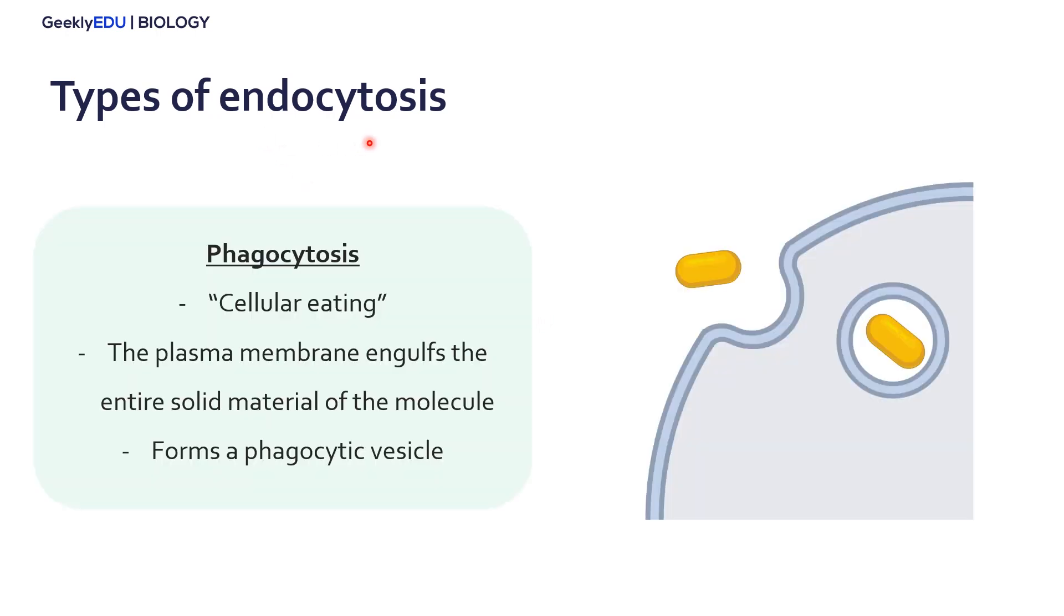Starting with types of endocytosis, there's three main types. The first is called phagocytosis or often referred to as cellular eating. This is when the plasma membrane engulfs an entire solid molecule. Once engulfed by the cell, it forms a phagocytic vesicle.